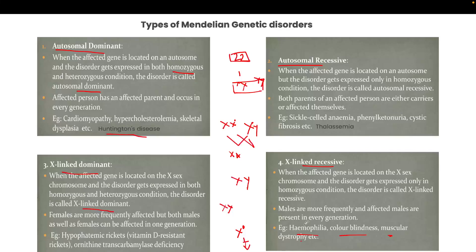Most exam questions come from autosomal recessive or X-linked recessive disorders, so pay special attention to those. For dominant conditions, if the character is present in even one gene locus, the offspring will be affected. For autosomal recessive, it must be in homozygous recessive condition. For X-linked recessive, if the mother is a carrier and the father is affected, the offspring will be affected.